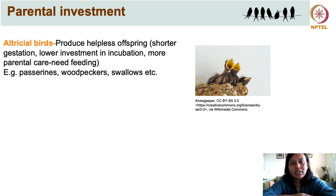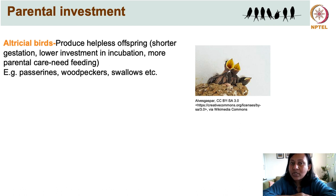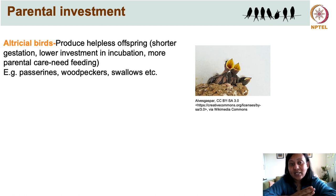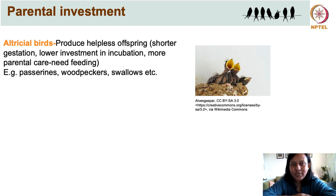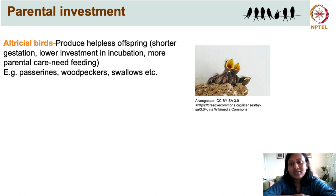The first are altricial birds, which produce helpless, naked offspring. This typically involves a shorter incubation period, very low investment in incubation of eggs, and more parental care is required when the chicks hatch. Because they are born so helpless, they are fed by the parents for a long period until they can fledge — that is the stage where the parent invests a lot of energy. Examples include most songbirds or passerines, woodpeckers, and swallows.